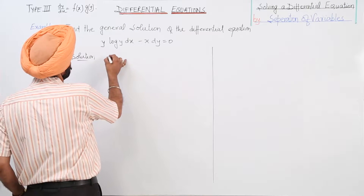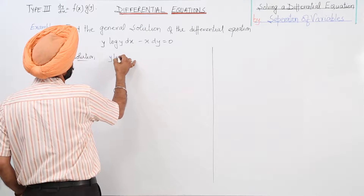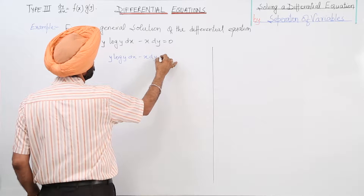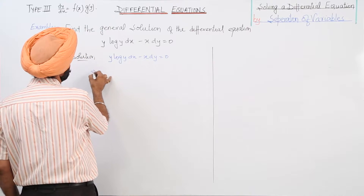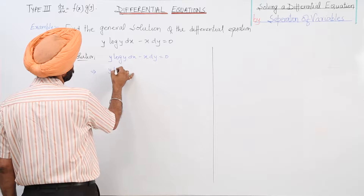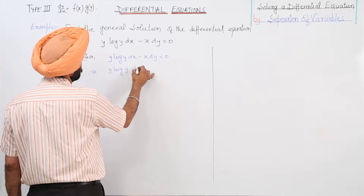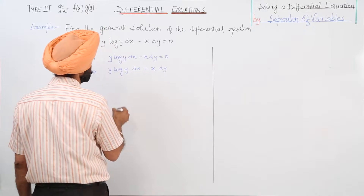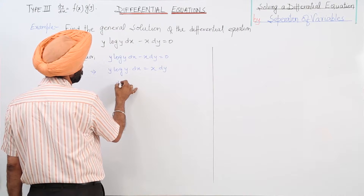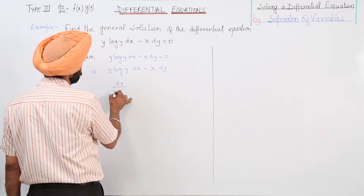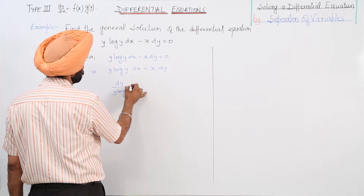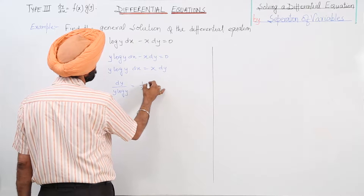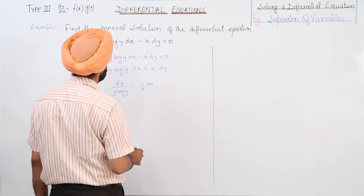Example: y log y dx minus x dy is equal to 0. Rearranging, y log y dx is equal to x dy, which gives dy upon y log y is equal to 1 upon x dx.